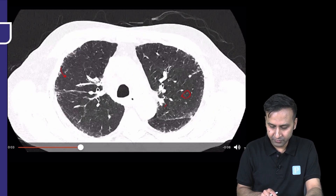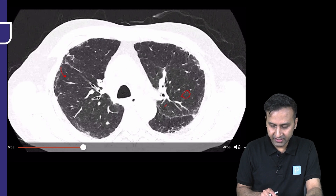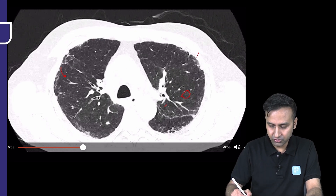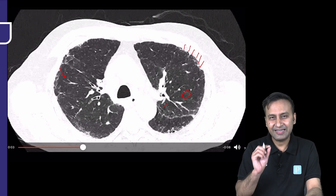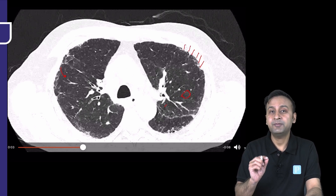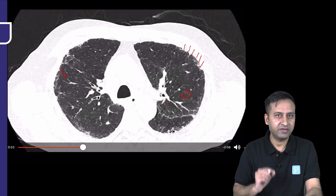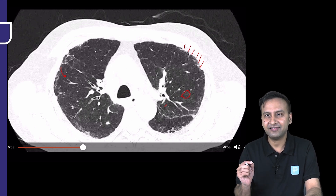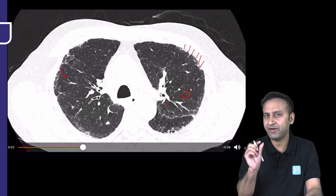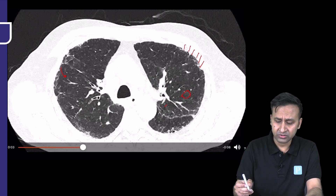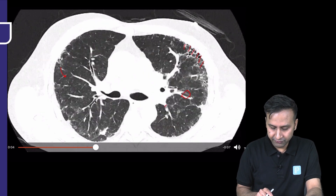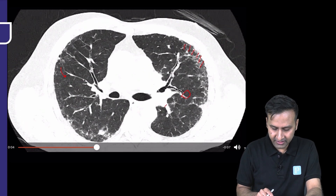As we go down, we can see something else. We already looked at the interlobular septal thickening. Now I want you to look here — there is a fine, lace-like, net-like appearance of reticular opacities in this area. Because these are linear reticular opacities in a lace-like fashion, very fine and very small, this is intralobular septal thickening.